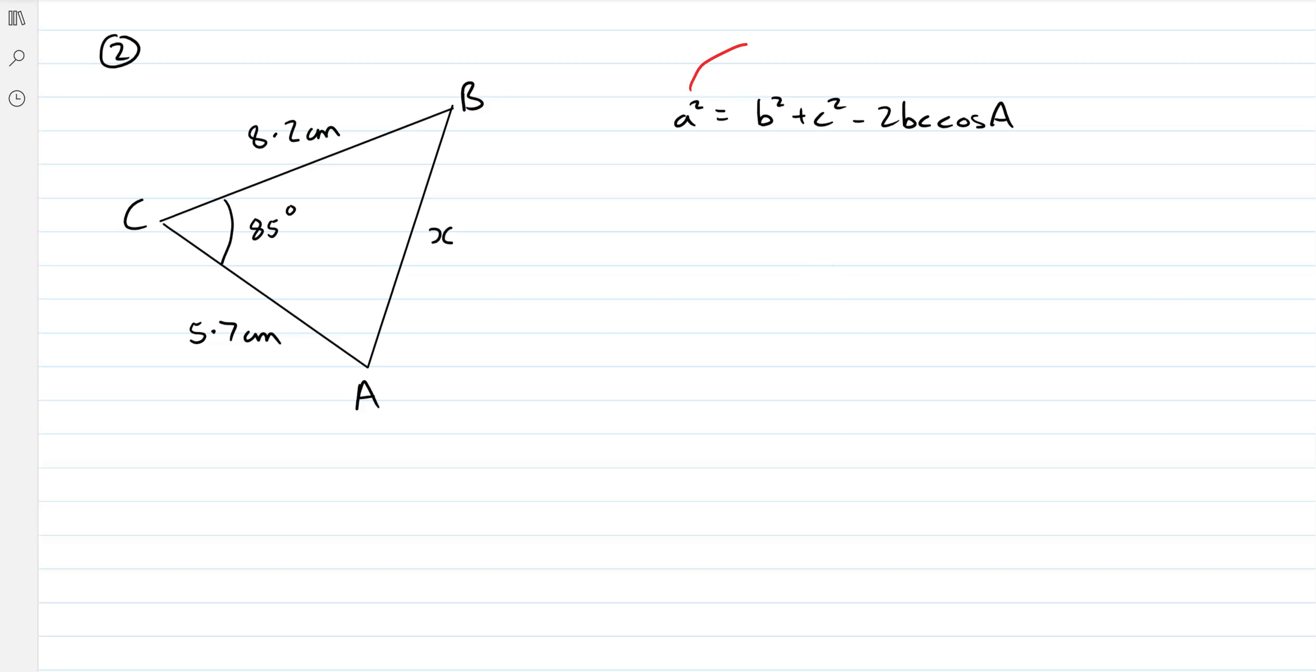Now remember, the important thing here is that this letter and this angle always match up. Because if we think about labeling our triangle, when we come to labeling it, we've got opposite angle A we want little a, opposite angle B we want little b, and opposite angle C we want little c. So there's no point in me putting a in here because I've already got a. So if I'm trying to find this particular length here, then because it's c, I should always try and start with c as the subject.